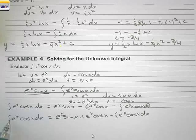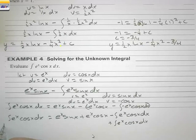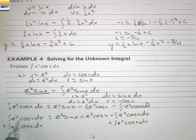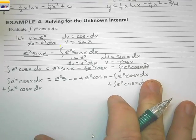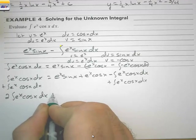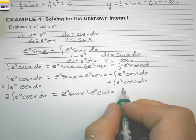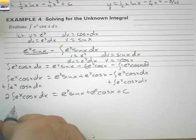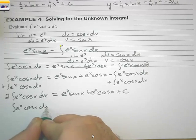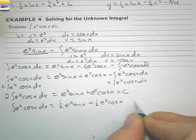Notice that the integral of eˣ·cos(x) dx appears on both sides. So we add it to both sides, giving two times the integral of eˣ·cos(x) dx equals eˣ·sin(x) plus eˣ·cos(x) plus C. Dividing both sides by 2, we get the integral of eˣ·cos(x) dx equals (1/2)eˣ·sin(x) plus (1/2)eˣ·cos(x) plus C.